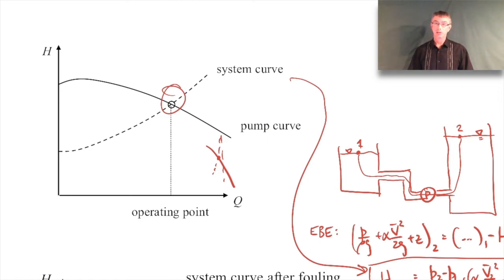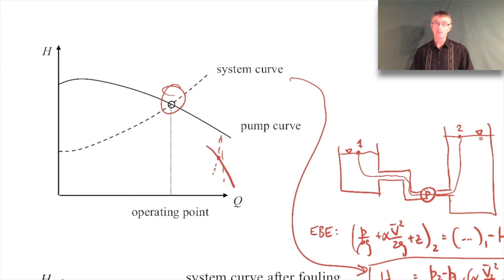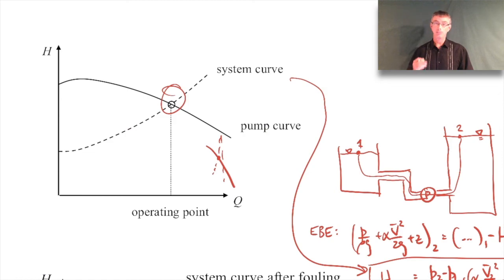That's all I need to say about this topic. Hopefully you understand the idea: the pump curve is the head rise that the pump can provide, the system curve is the head rise we need to operate at a given flow rate, and that system curve is found using the extended Bernoulli equation. Just where they intersect is where the pump provides exactly the amount of head rise that we need for our system - so it's the intersection of the two.